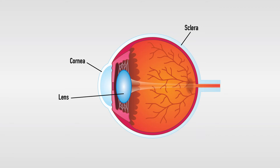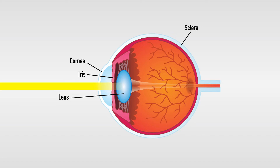Lens: the anterior and posterior faces of the lens form a biconvex structure that allows the passage of light into the eye. Iris: located in front of the lens, it is the muscle on the pupillary edge that allows more or less light to pass into the eye.